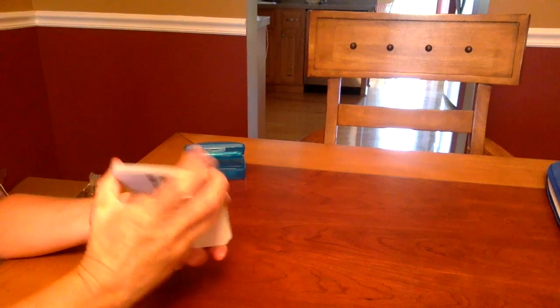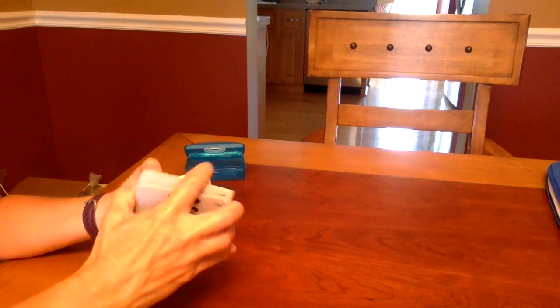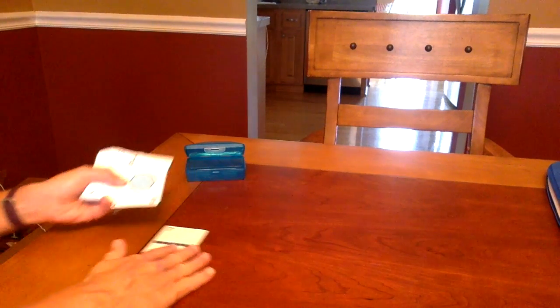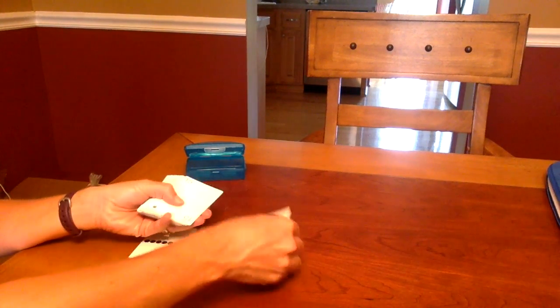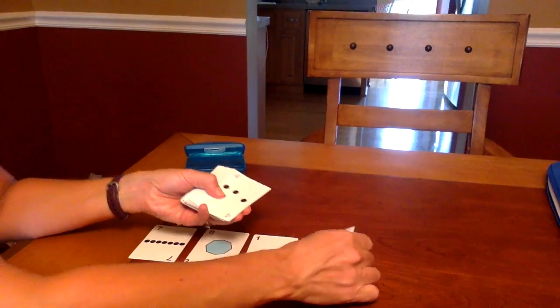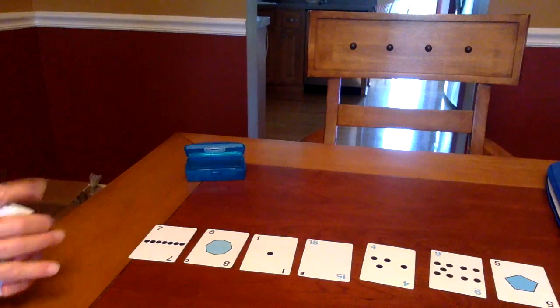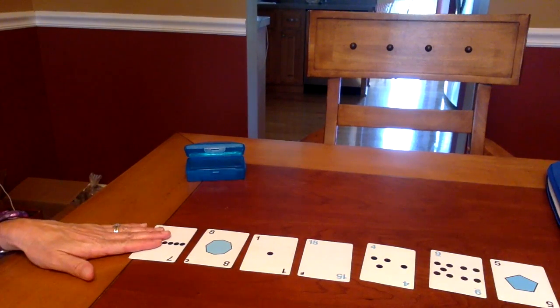First thing that you want to do is partner up with someone. Go ahead and shuffle your cards, using all of them. You will lay out seven cards in front of each person: 1, 2, 3, 4, 5, 6, 7. My partner would have seven out in front of them as well.